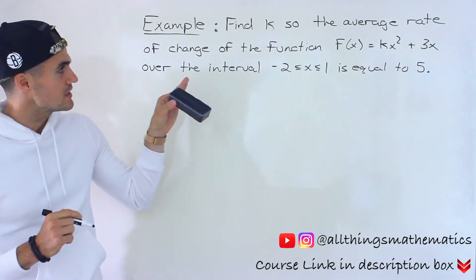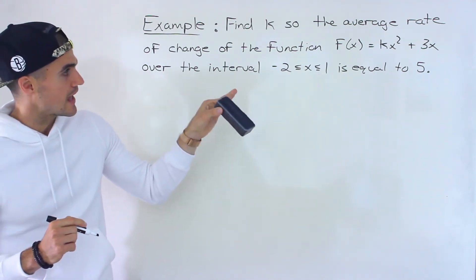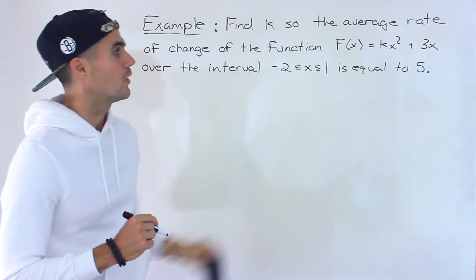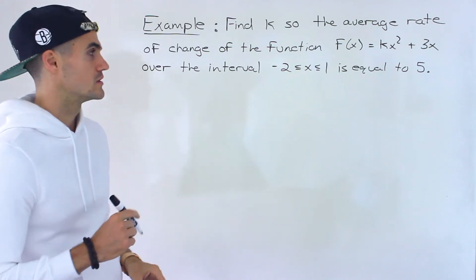We have to find k, so the average rate of change of the function f(x) equals kx squared plus 3x over the interval where x is between negative 2 and 1 is equal to 5.